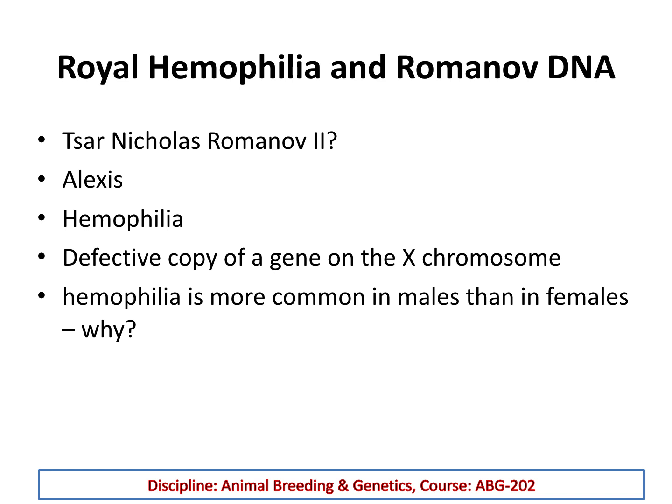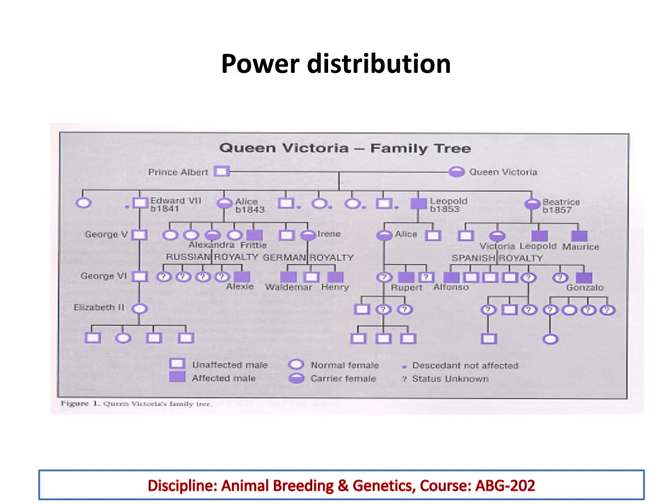The answer is straightforward. Males have only one X chromosome, while females have two. The probability that a male's single X carries the defective haemophilic copy is higher than the probability that a female has both X chromosomes defective. For the disease to appear, both copies must be defective, so females are much less likely to be affected, although they can be carriers.